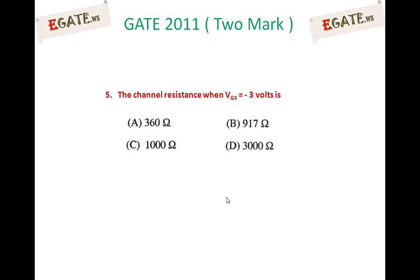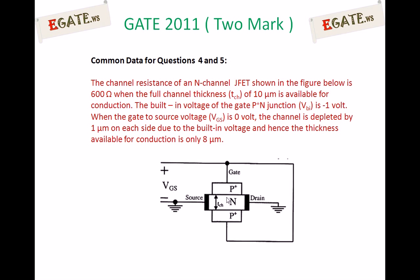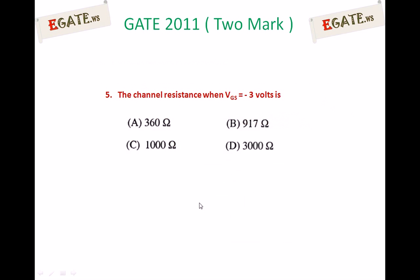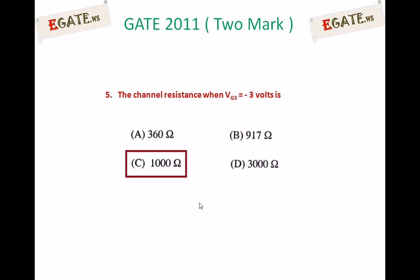You need to calculate the channel resistance when Vgs equals minus 3 volts. What is the channel resistance when Vgs equals minus 3 volts? The options are: 360 ohms, 917 ohms, 1000 ohms, or 3000 ohms. The correct answer is C: 1000 ohms.